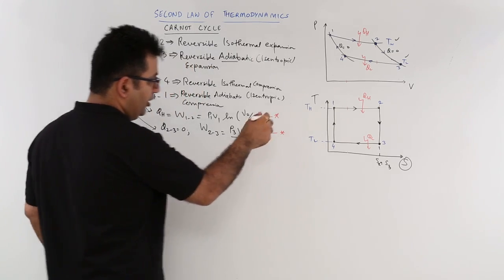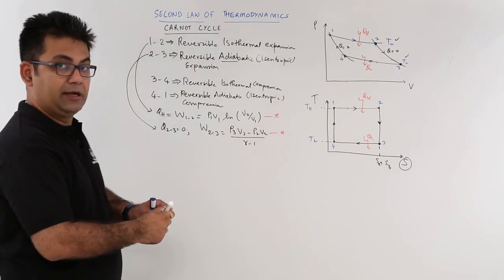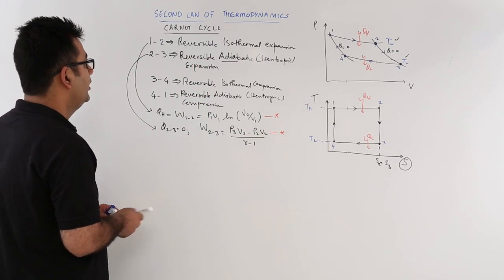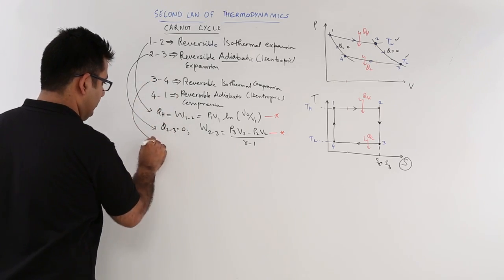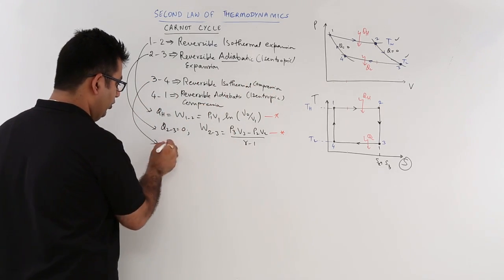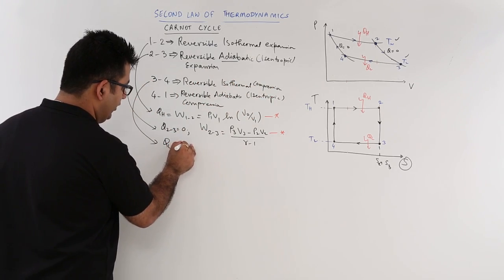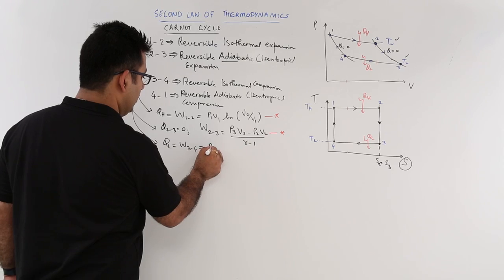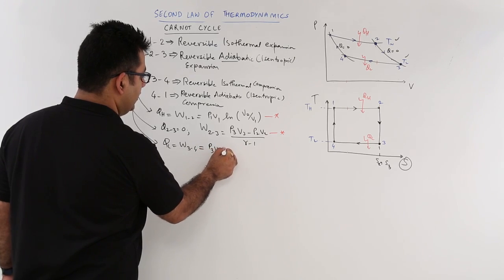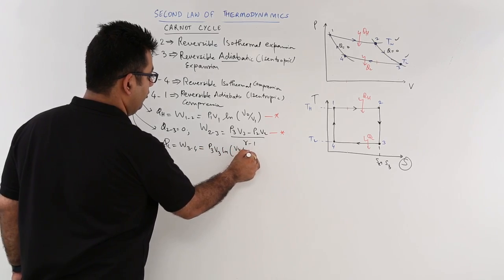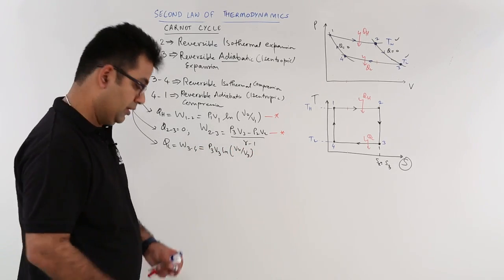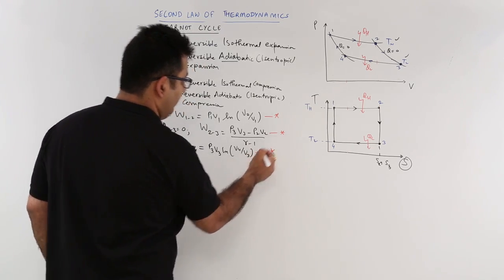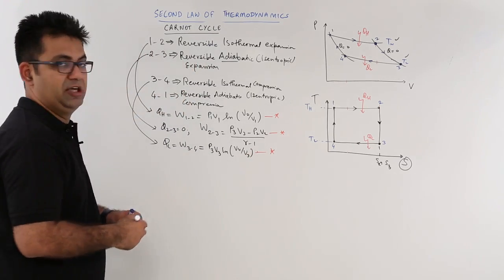Now let's come to process 3, 4. So for process 3, 4, QL will be equal to W3,4, isn't it? And that would be equal to P3 V3 natural log V4 by V3. So that is again isothermal work, wherein the isothermal work and the heat lost are same.